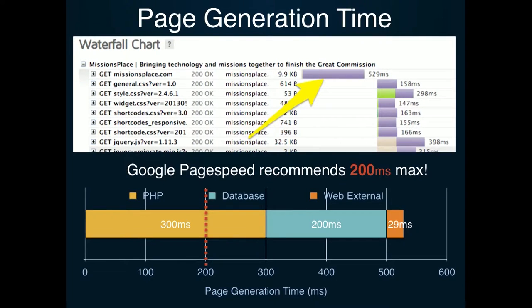So today we're going to be talking about fixing the page generation time — that part of the stack. If you look at a normal request to your website when you're logged in, you'll see a big bar where it's waiting for your page to be generated and sent to you, and then after that your browser can download all the assets. Talking about page generation time and how we can improve that can make a huge impact on your site, especially when it's a dynamic site.